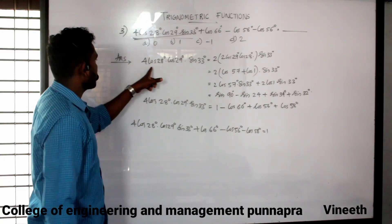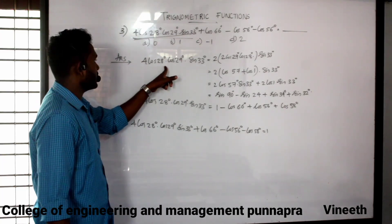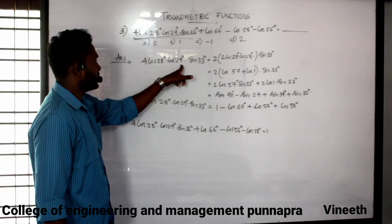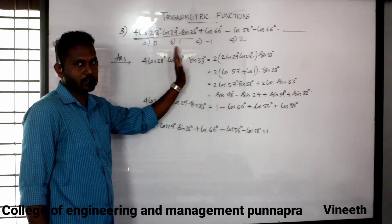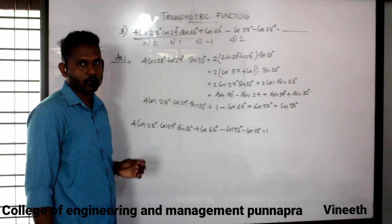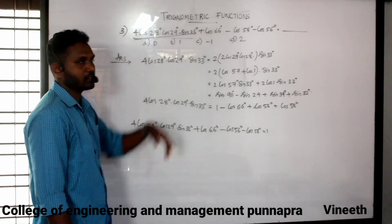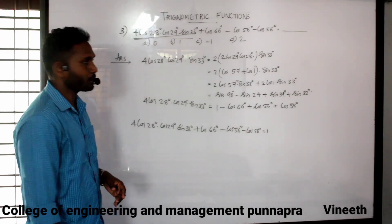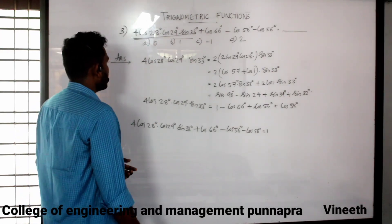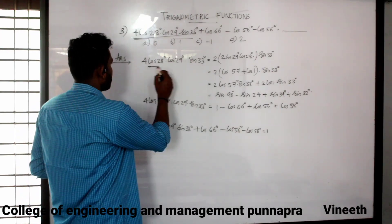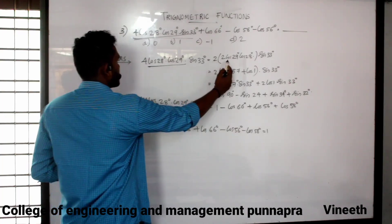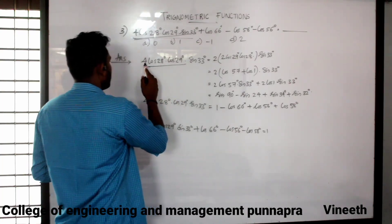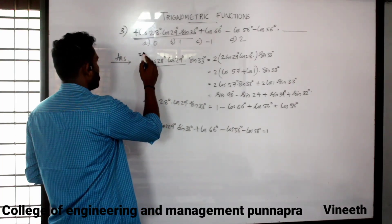We have cos 28 degree, cos 29 degree, sin 33 degree. When we say cos 28 degree times cos 29 degree, we have 4, 2, 2, 2, 2, and 2. Cos 29 degree, cos 28 degree, sin 33 degree.